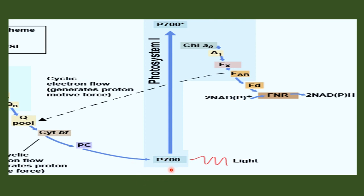In cyclic photophosphorylation, the chlorophyll electrons are excited and their reduction potential becomes very negative. The excited high-energy electron of P700 is captured by a special chlorophyll A molecule and then an iron-sulfur protein (FeS). The electron is eventually transferred to ferredoxin, which transfers electrons through a cyclic route via cytochrome B563, then plastoquinone, then cytochrome B6.